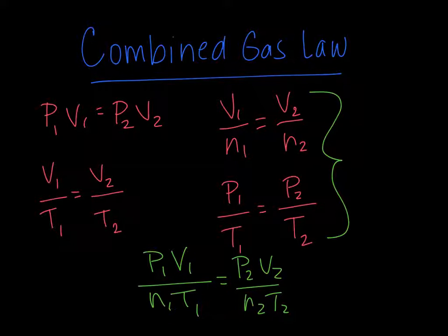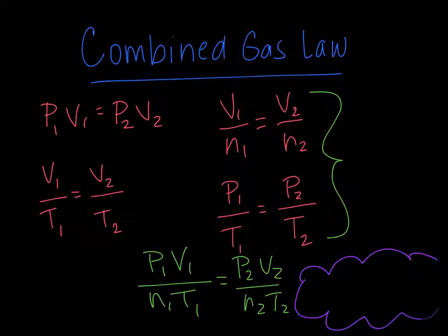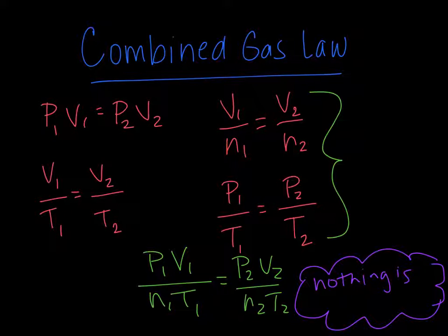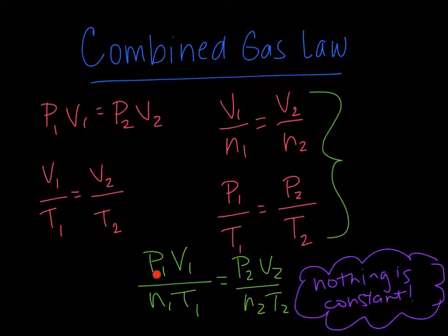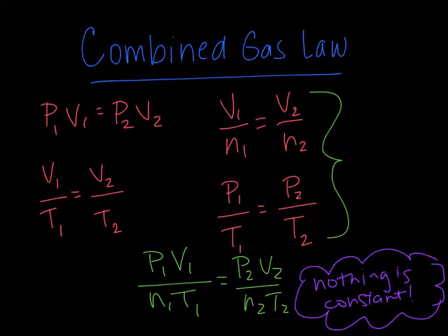P1V1 over N1T1 is equal to P2V2 over N2T2. What's different about this compared to the other laws we've talked about is that nothing is constant in this — everything is changing. We have P1 and P2, V1 and V2, N1 and N2, and T1 and T2, so they're all changing values.